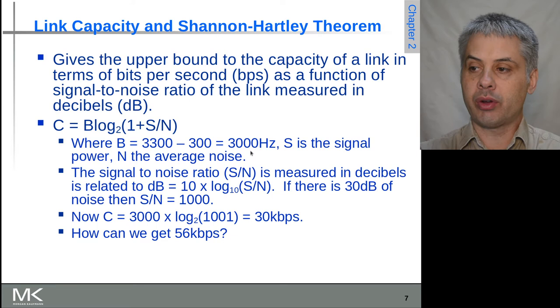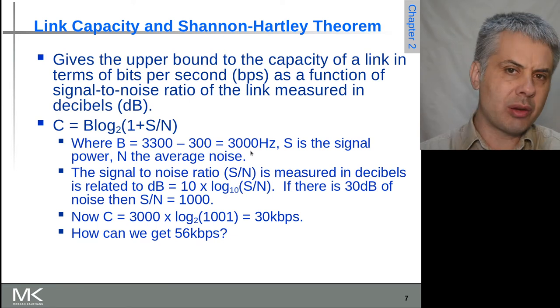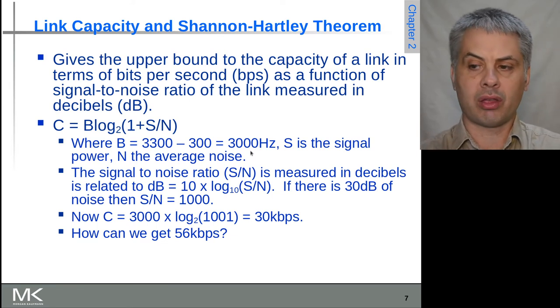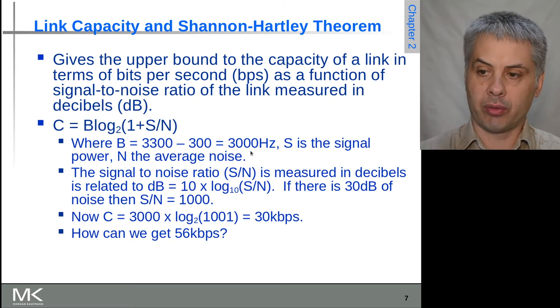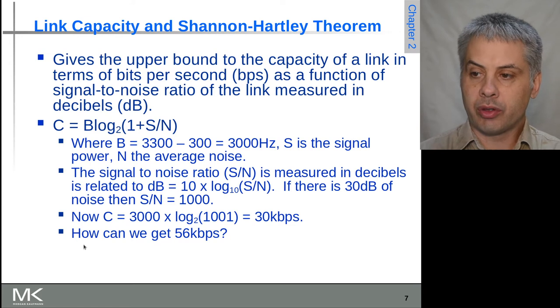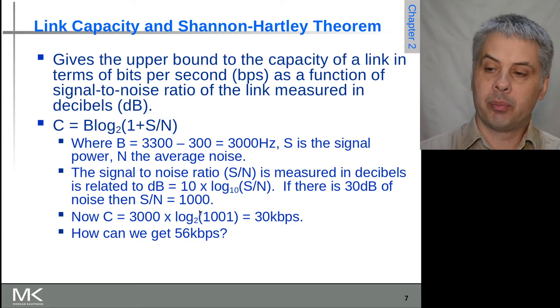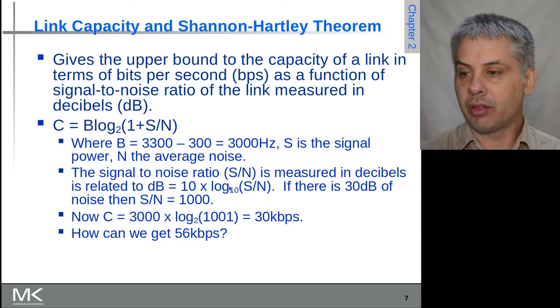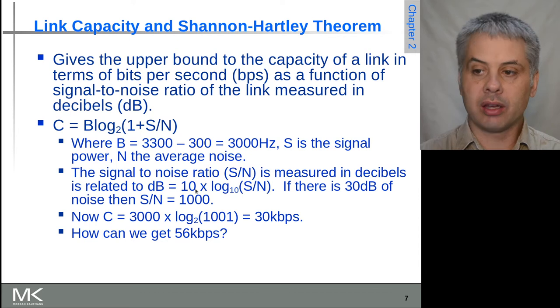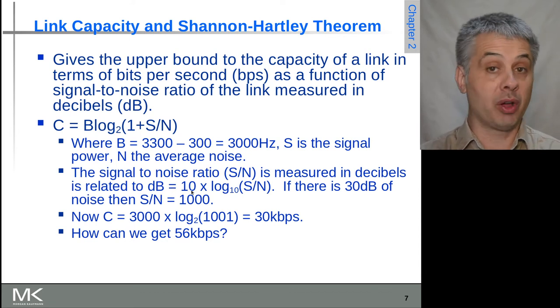Our signal to noise ratio is traditionally measured in decibels, so this is essentially a log base-10 scale. A signal to noise ratio of 1000 is equivalent to 30 dB, because log base-10 of 1000 is 3, times 10 equals 30. If it was just in bels then it would be 3 instead of 30.